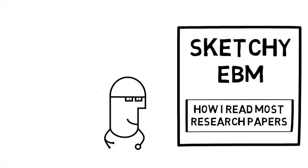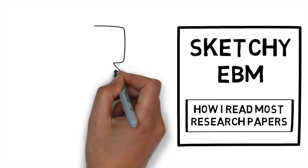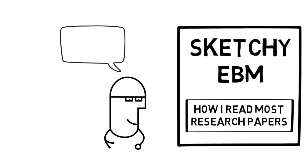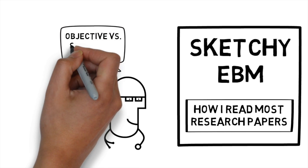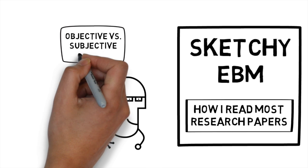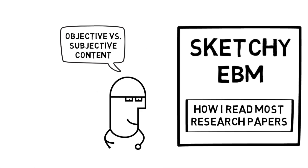At the end of the day, what do I want you to know about how I read a paper? Well, by and large, I look for the objective information in a research paper, and stay clear of the subjective content. Our objective information is going to come from the methods and results section. I want to know what did the authors do, and what did they find?